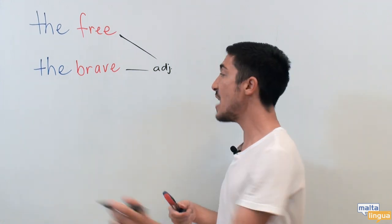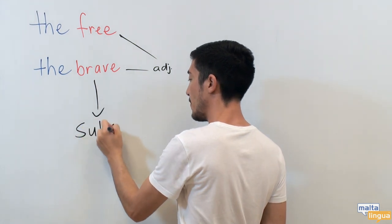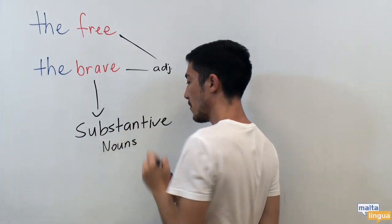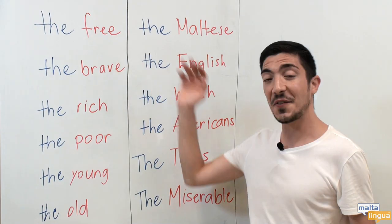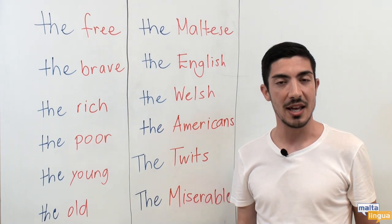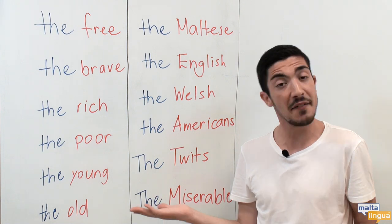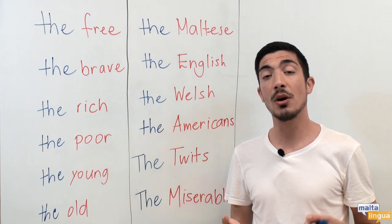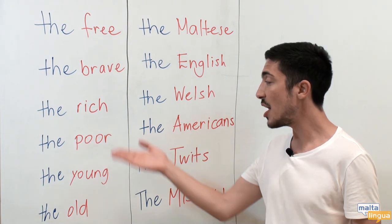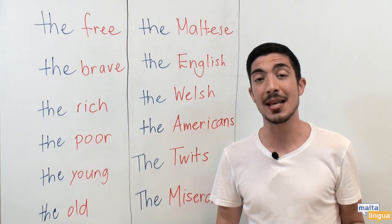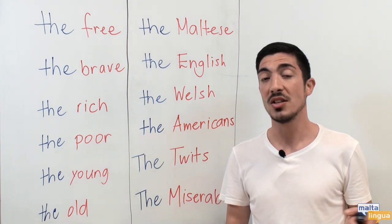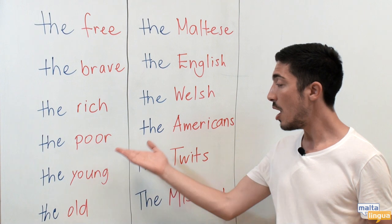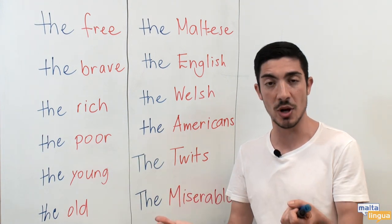We call these type of nouns substantive nouns. So, besides the free and the brave, which are great examples, in English there are always many other examples. We can use substantive nouns to talk about groups of people in society — for instance, the rich and the poor. We generally treat substantive nouns as plural, so they are always followed by a plural verb. For instance, the rich have more money than the poor, or the poor are fewer in number in some parts of the world.